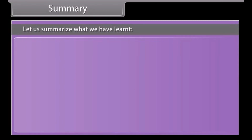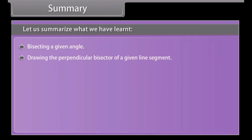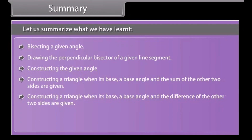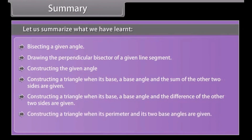Let us summarize what we have learned: bisecting a given angle; drawing the perpendicular bisector of a given line segment; constructing a given angle; constructing a triangle when its base, a base angle and the sum of the other two sides are given; and constructing a triangle when its perimeter and its two base angles are given.